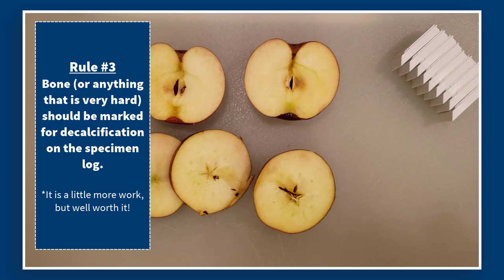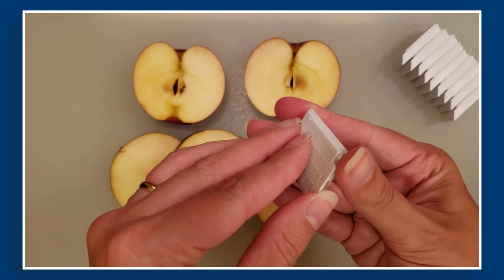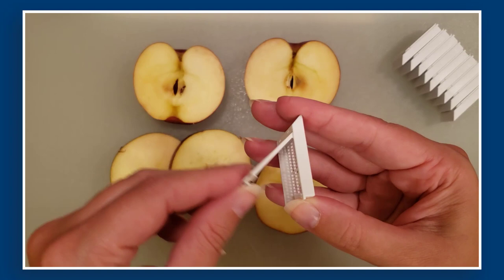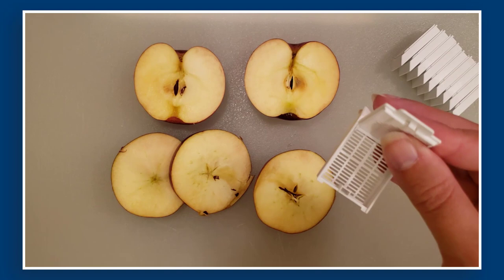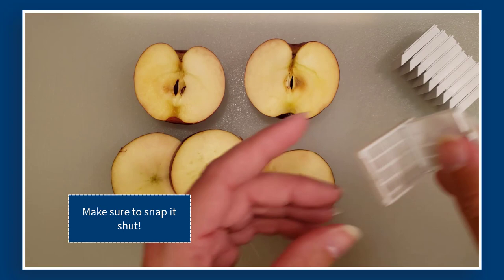The only other limitation is if you take a section of bone — we can do that, you just need to mark on the sheet that it needs to be decalcified. When you find an area you want to look at histologically, you're going to take one of your cassettes and open it up — it pops open on the back side and has a nice little hinge. Open it up and you can put in multiple pieces of tissue, making sure they're not so small that they fall through the little holes.